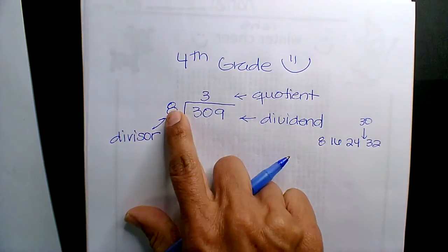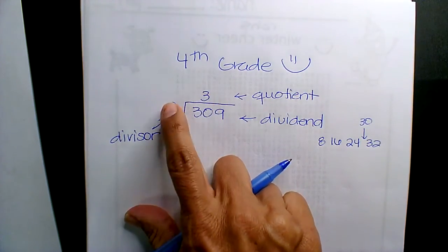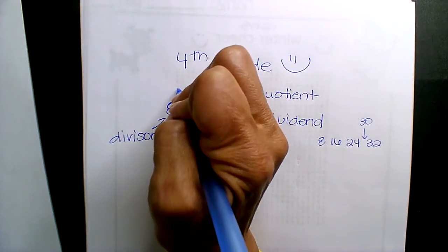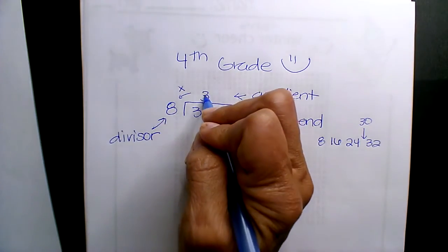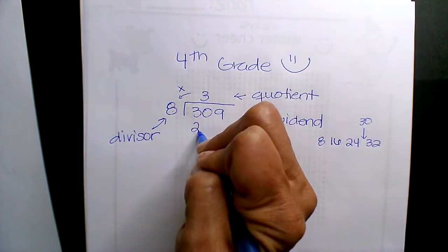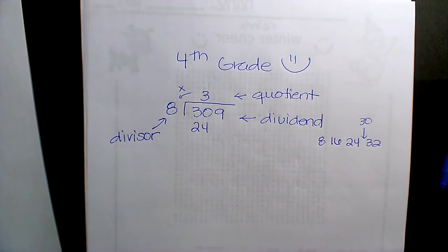So 8 times 3, or 3 times 8, remember, you multiply going this way, right? 3 times 8 is 24, and then you guys subtract. Correct.